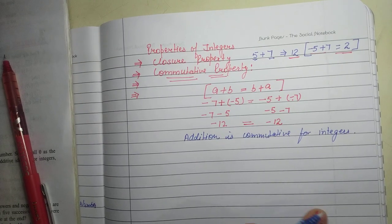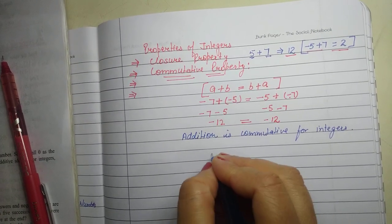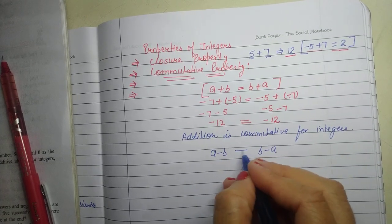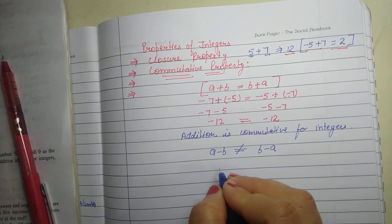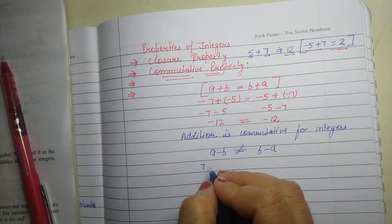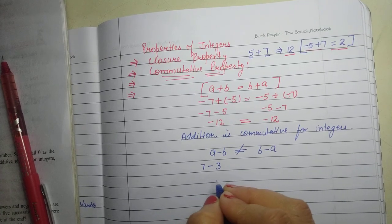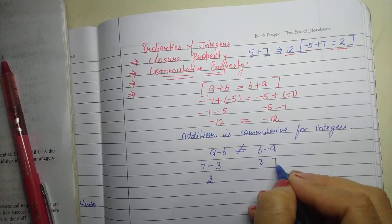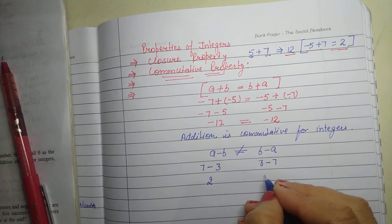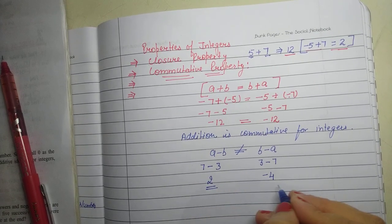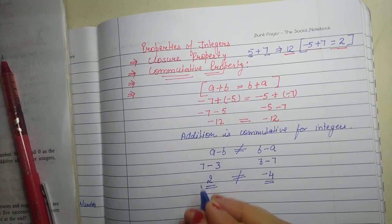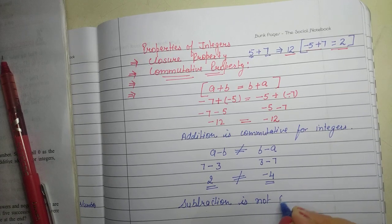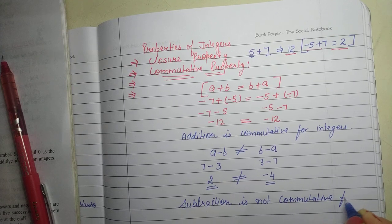In another case, if we subtract two integers — for example a minus b and b minus a — do we get the same result? No, the result will be different. For example, 7 minus 3 gives 4. Now changing the order: 3 minus 7 gives minus 4. Since 4 and minus 4 are not equal, subtraction is not commutative for integers.